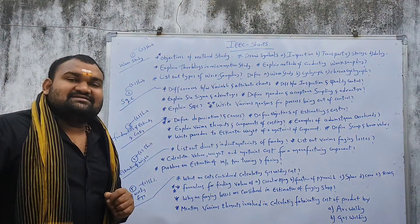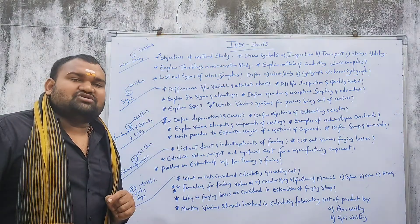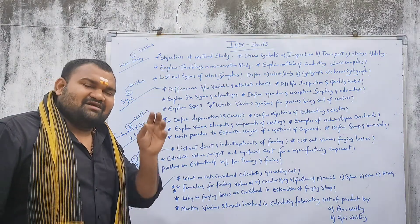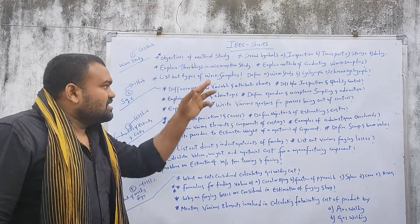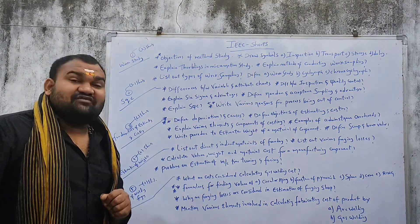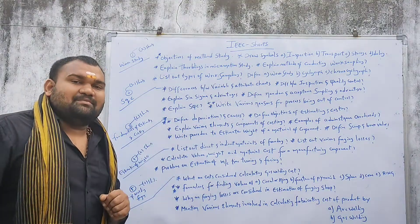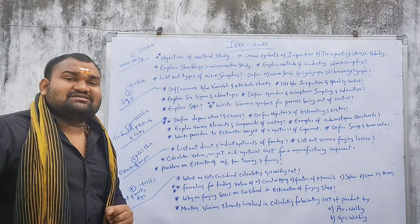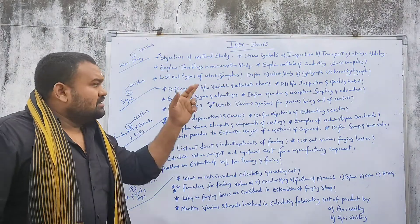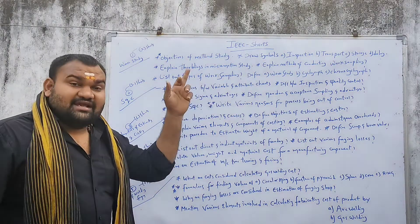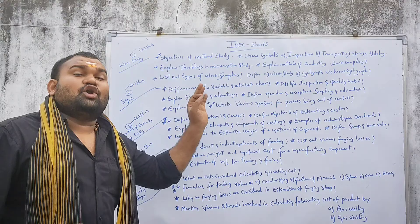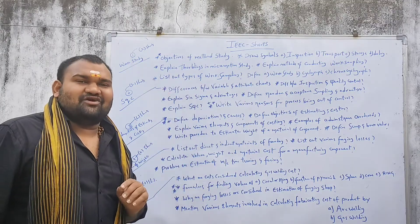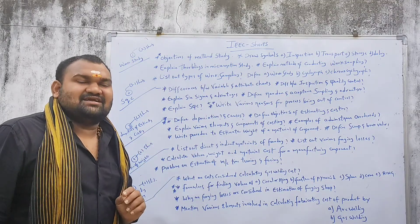Explain turbulence in micromotion study. Therblings and data. Symbols of therbligs. Explain methods of conducting work sampling. List out the types of work sampling. Define: A. Work Study, B. Cyclograph, and C. Chronocyclograph. This is the single-line definition.